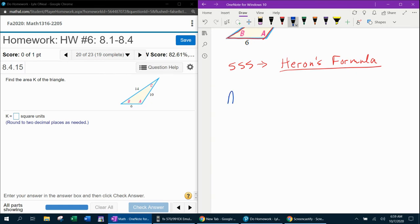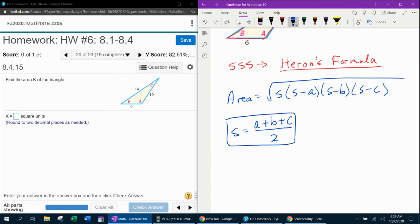So Heron's formula says the area is the square root of S times S minus A times S minus B times S minus C, where S is the semi-perimeter, which means add up all the sides and take half of it. So you're going to have to calculate the semi-perimeter first, and then you can plug into Heron's formula. Let's get started.